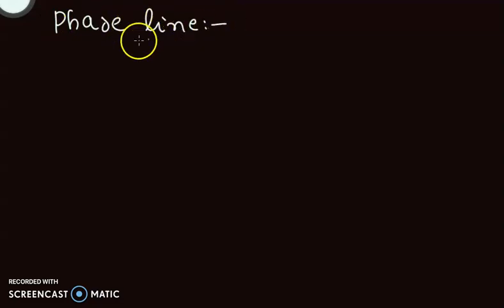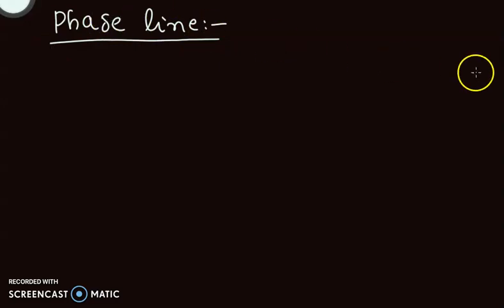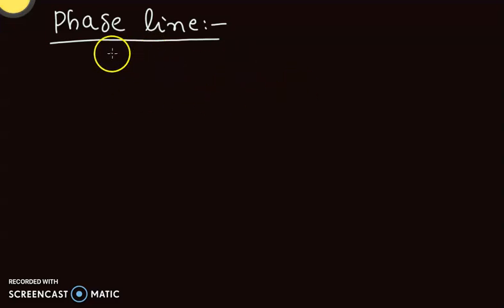So first we will draw its phase line. The phase line is nothing but a line that shows the behavior of the solution on a line. Because we are in the one-dimensional setting, that will be a phase line, and if we are in the two-dimensional setting then it will be a phase portrait.